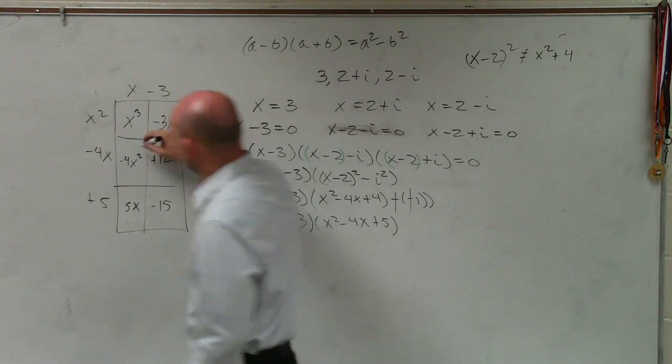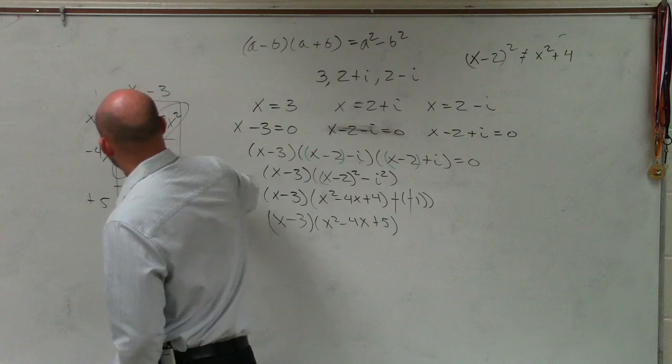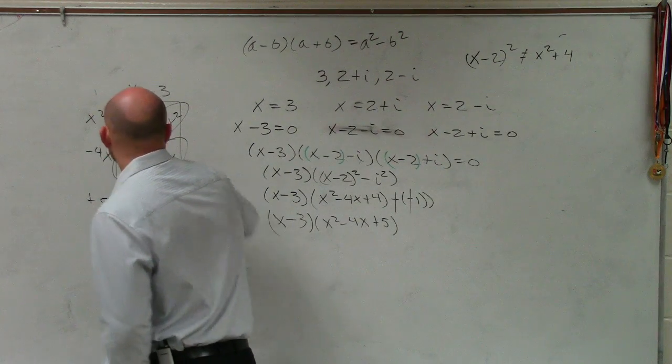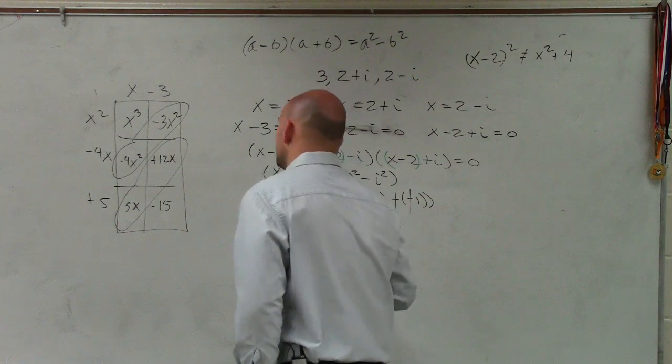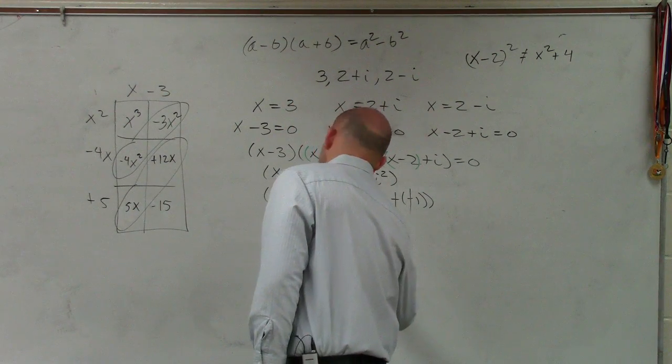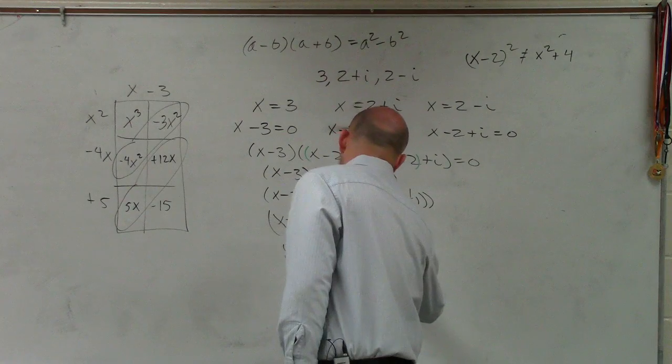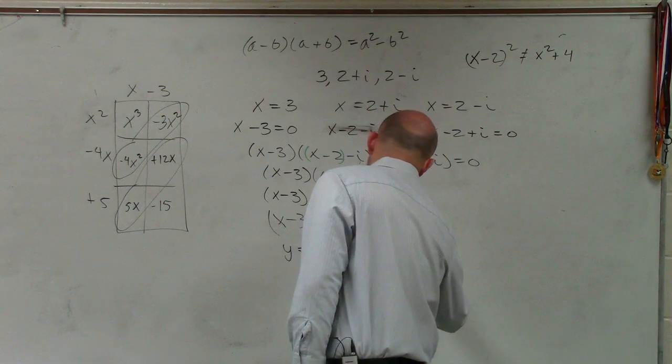Then we notice that these are like terms. These are like terms. So therefore my final polynomial is y equals x cubed minus 7x squared plus 17x minus 15.